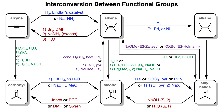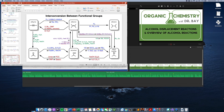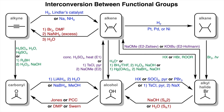And lastly, to go from an alkane to an alkyl halide, you could use radical halogenation with light. Keep in mind that this is just a generalized map, and that there could be any number of carbons connected to each of these functional groups.